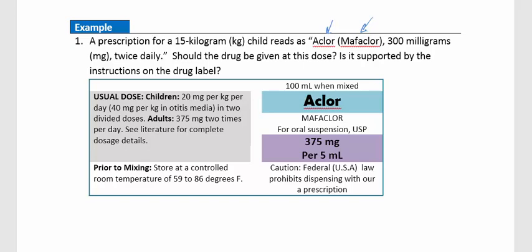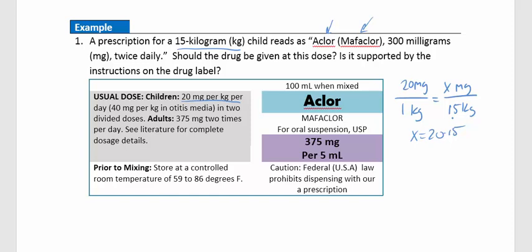Let's use the usual dose to figure out what a 15 kg child would normally get. The usual dose is 20 mg per 1 kg. So for a 15 kg child, we cross multiply: x equals 20 times 15, which gives us 300 mg per day.